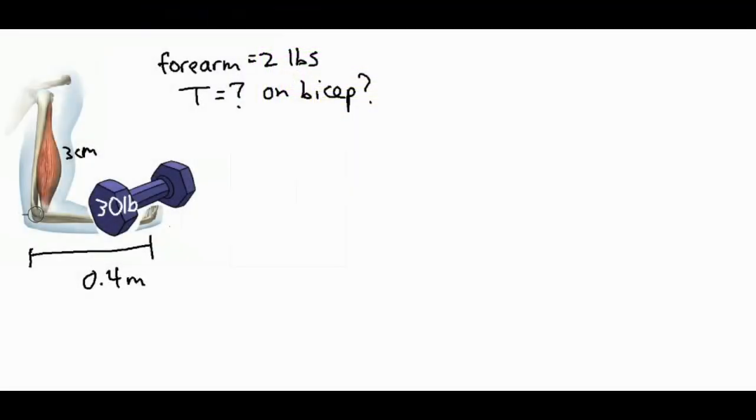In this video we're going to be analyzing a bicep doing a curl on a 30-pound dumbbell, and we're going to figure out how much tension a bicep actually has to produce to curl a 30-pound weight.